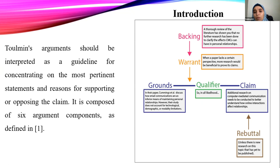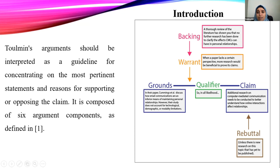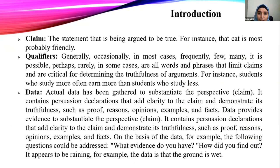The six components of Toulmin's argument include: first, the ground — meaning evidence, premises, data, and well-known facts. Then, the claim is the inference according to the data. The reason or connection between the ground and the claim exists in the warrant. We also have backing and rebuttal, where rebuttal is the opposing viewpoint or weakness for the claim.